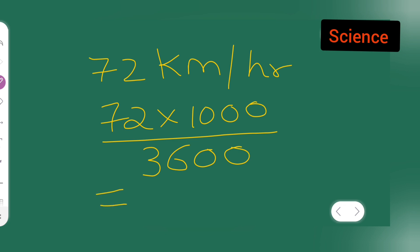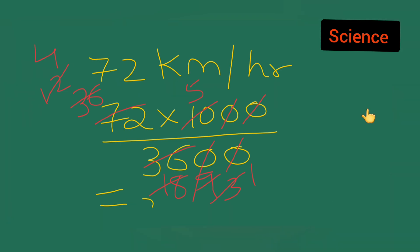Now simplify: cancel the common zeros and factors. After cancellation and simplification, the answer comes out to 20. So the answer is 20 meters per second.